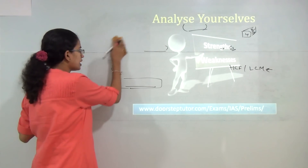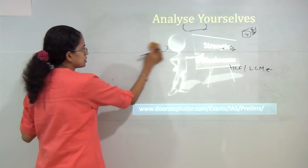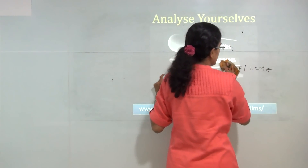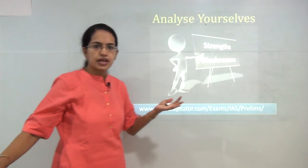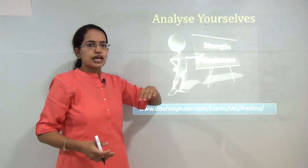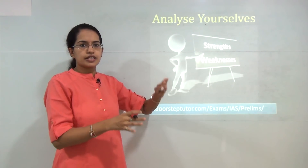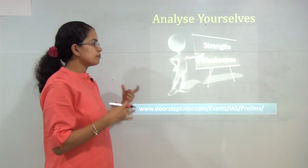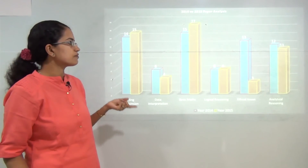What is important specifically for Paper 2 is to analyze your weaknesses and strengths. Someone from a science background might be good at mathematics but need to focus on reading comprehension. Someone from a social sciences background might be good at reading comprehension but need more practice in analytical and logical reasoning. It is important to analyze your own strengths and weaknesses before moving forward with practice.